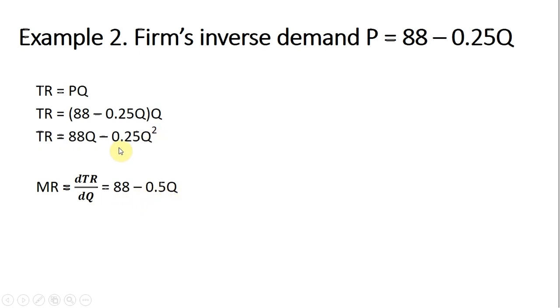total revenue equals 88Q minus 0.25Q squared. Taking the derivative gives us marginal revenue of 88 minus 0.5Q. So once again, 2 times minus 0.25 is minus 0.5Q. And once again, you can see that relationship between the price equation and the marginal revenue equation. Marginal revenue looks just like the price equation except that it has a slope that is twice as steep.